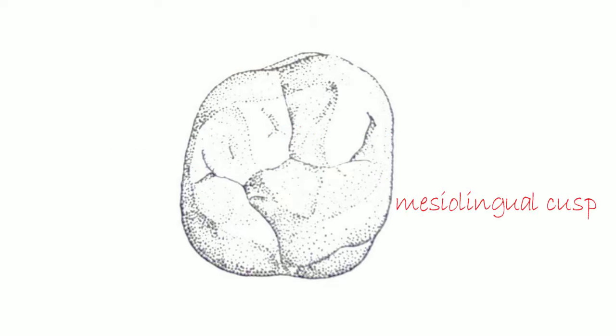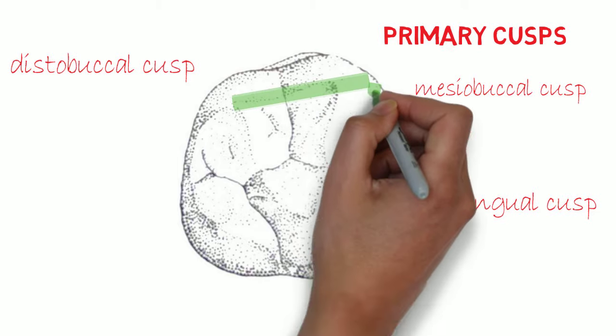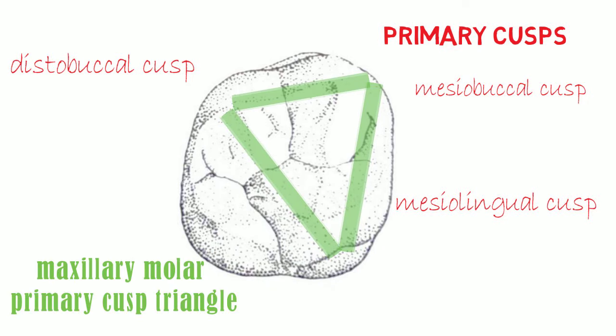In maxillary molars, three cusps — the mesolingual cusp, mesobuccal cusp, and distobuccal cusp — are considered the primary cusps. These cusps joined by the cuspal ridges, mesial marginal ridge, and oblique ridge form the maxillary molar primary cusp triangle. This is an important feature in identifying maxillary molars.